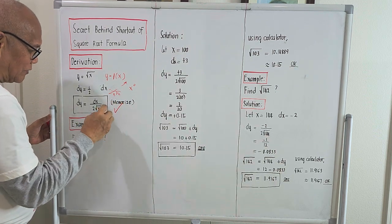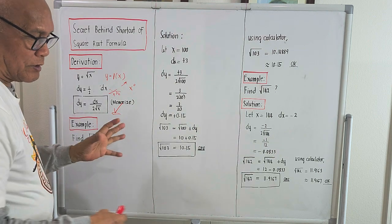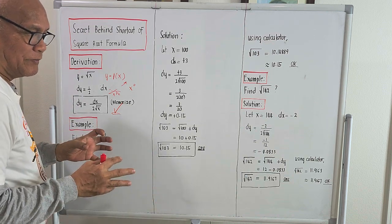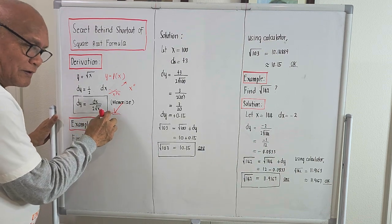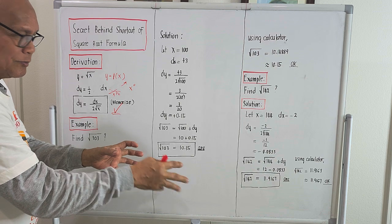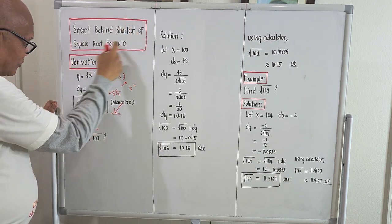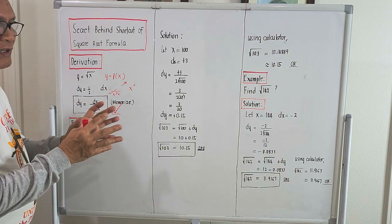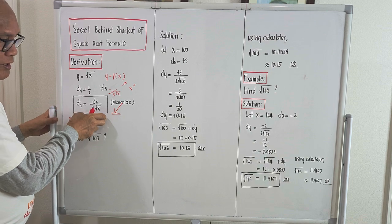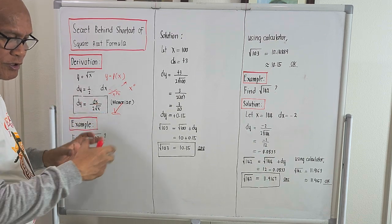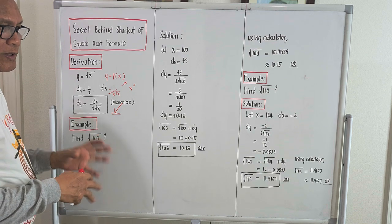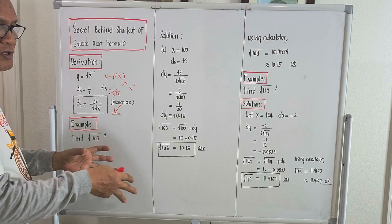This is the secret I am telling you. Others are using it without deriving it, but it seems like a trick — it's not a trick, because this one actually emanates from differential calculus. This is very useful because in the computation of the square root of a number which is not a perfect square, we can use this formula. It emanates from differential calculus, and it is called differential approximation — it's almost the same as the exact answer from a calculator.